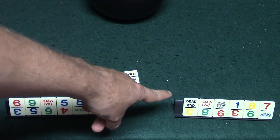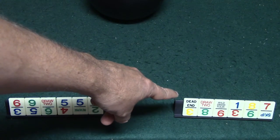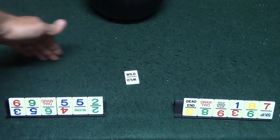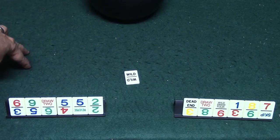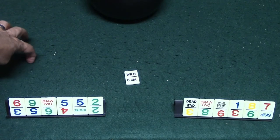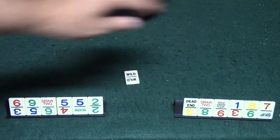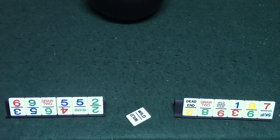Now the dead end tile basically is going to end the path that you're placing the dominoes. So if you're going in this direction and someone plays a dead end tile, that basically is going to end that row and you'll have to play in the other three rows which I'll talk about here in a little bit.